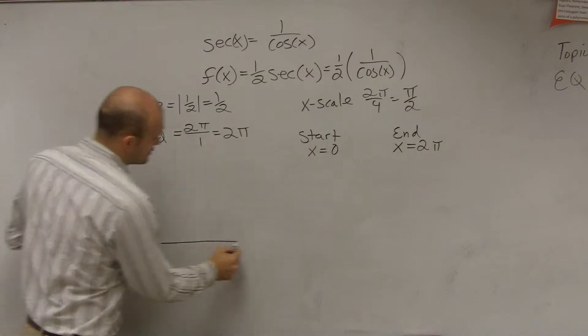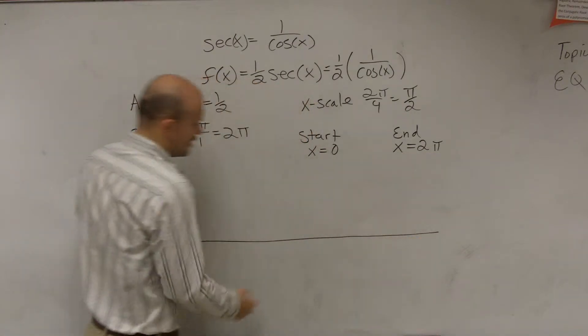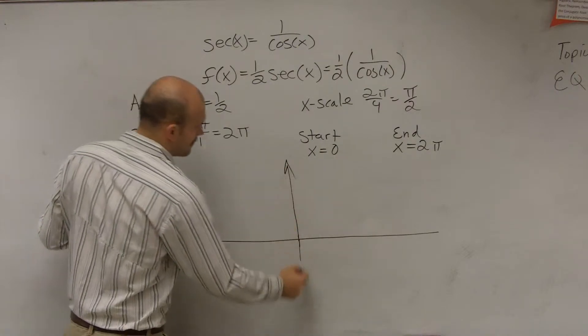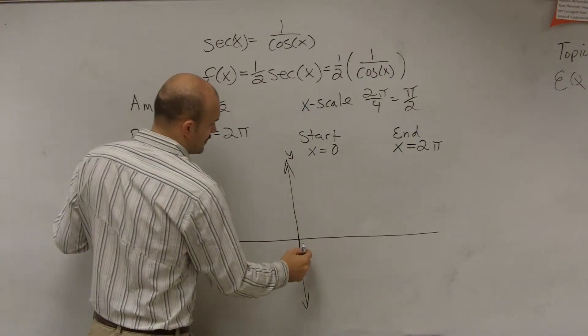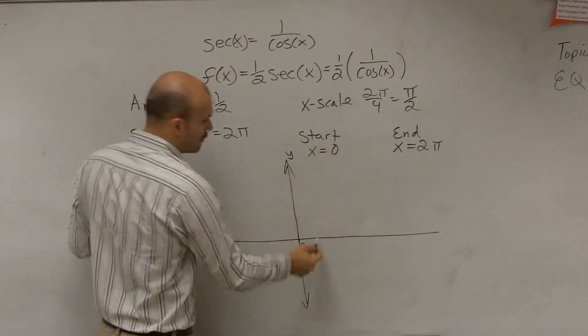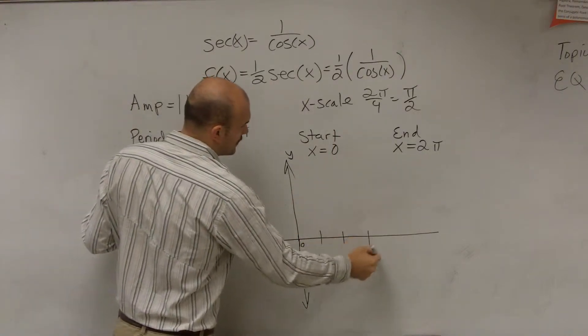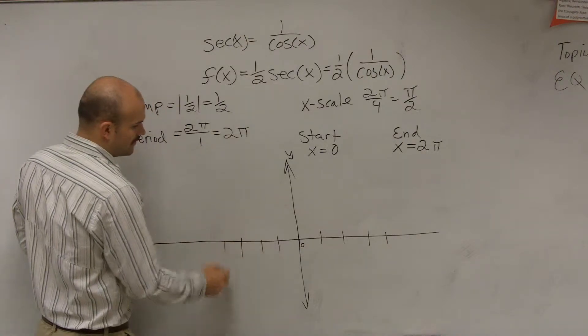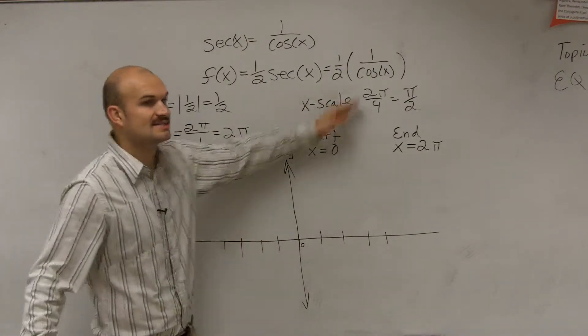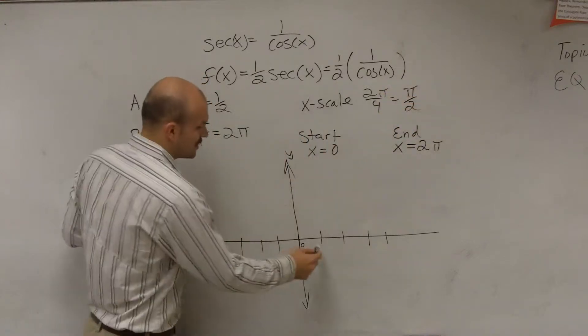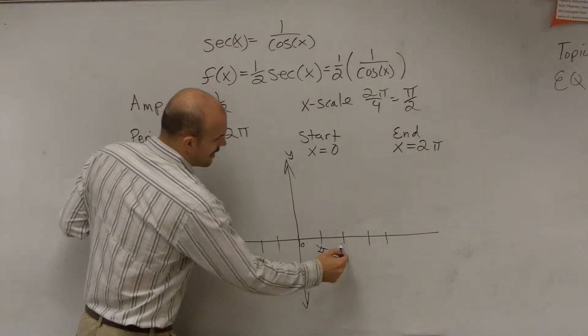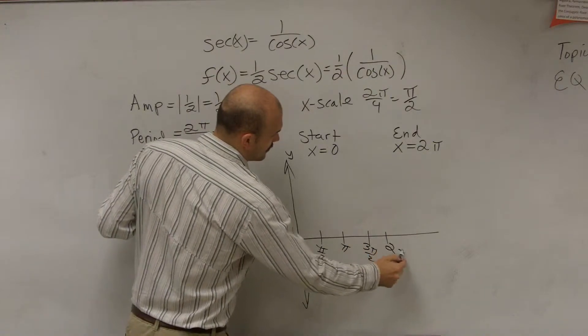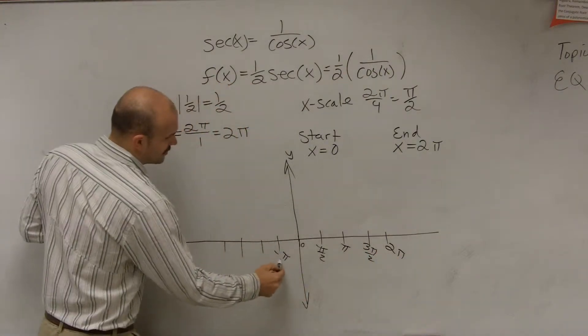So let's go ahead and graph this. I'll start at x equals 0, which will be my y-axis. So say x equals 0. And then I'm going to have four critical points: 1, 2, 3, 4. We'll go in the negative direction as well: 1, 2, 3, 4. And then remember our x scale, or critical points, was pi halves between each other. So that means my first point is pi halves, it's pi, 3 pi over 2, and 2 pi. You can also go in the negative direction.